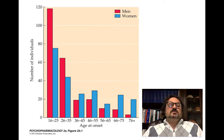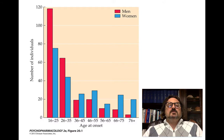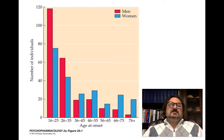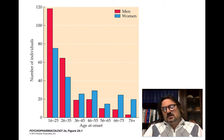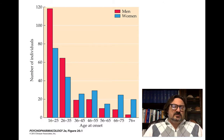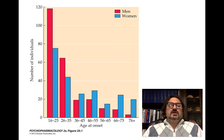Between the ages of 16 and 25, more men are diagnosed, whereas over the age of 56, more women are diagnosed than men. However, schizophrenia is not really diagnosed later in life. If someone is having delusions or hallucinations in later life, neurologists will typically explore other conditions with similar symptoms, such as Lewy body disease, or hallucinations due to delirium caused by drugs, alcohol-related issues, metabolic changes, or sepsis.